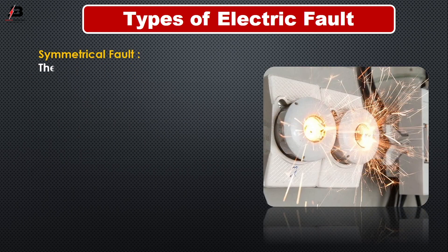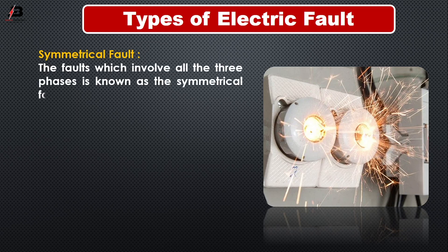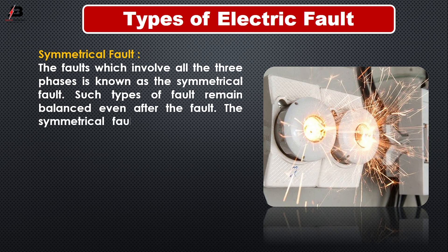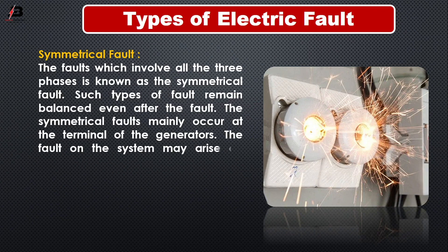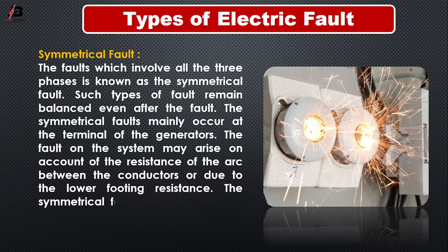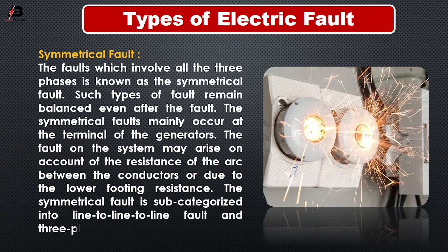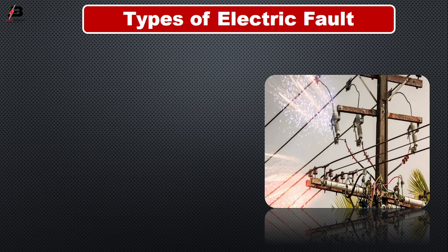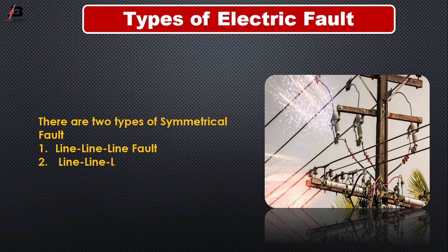Symmetrical fault. The fault which involves all the three phases is known as symmetrical fault. Such type of fault remains balanced even after the fault. The symmetrical fault mainly occurs at the terminal of the generator. The fault on the system may arise on account of the resistance of the arc between the conductors or due to the lower footing resistance. The symmetrical fault is subcategorized into: number one, line-to-line-to-line fault; number two, line-to-line-to-line and ground fault.